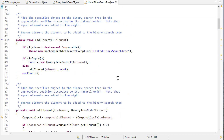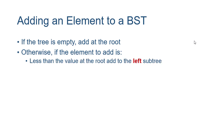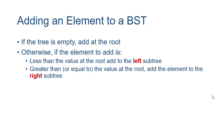Our next procedure is addElement. To add an element to a binary search tree, the simplest case is if the tree is empty — we add that element to a node and that node becomes the root. Otherwise, we compare the element we're adding to the element stored at the root. If the element to add is less than the root's value, we add the new node to the left subtree. If the value is greater than or equal to the root's value, we add it to the right subtree. A binary search tree has a recursive structure — we can think of every node as the root of a subtree — so we apply this same mechanism until there is nothing in the left or right subtree, at which point we add the element in that location.